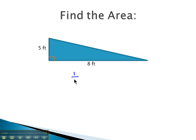Our formula for the area of a triangle is 1 half times the base times the height. We see here we've got a height of 5 feet and a base of 8 feet, and so we'll plug these into the formula. 1 half times the base, which is 8 feet, times the height, which is 5 feet.